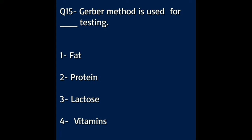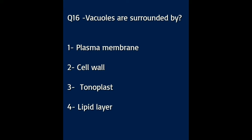Question number fifteen: the GERBER method is used for which testing? Option A: fat. Option B: protein. Option C: lactose. Option D: vitamins. The answer to this question is fat.